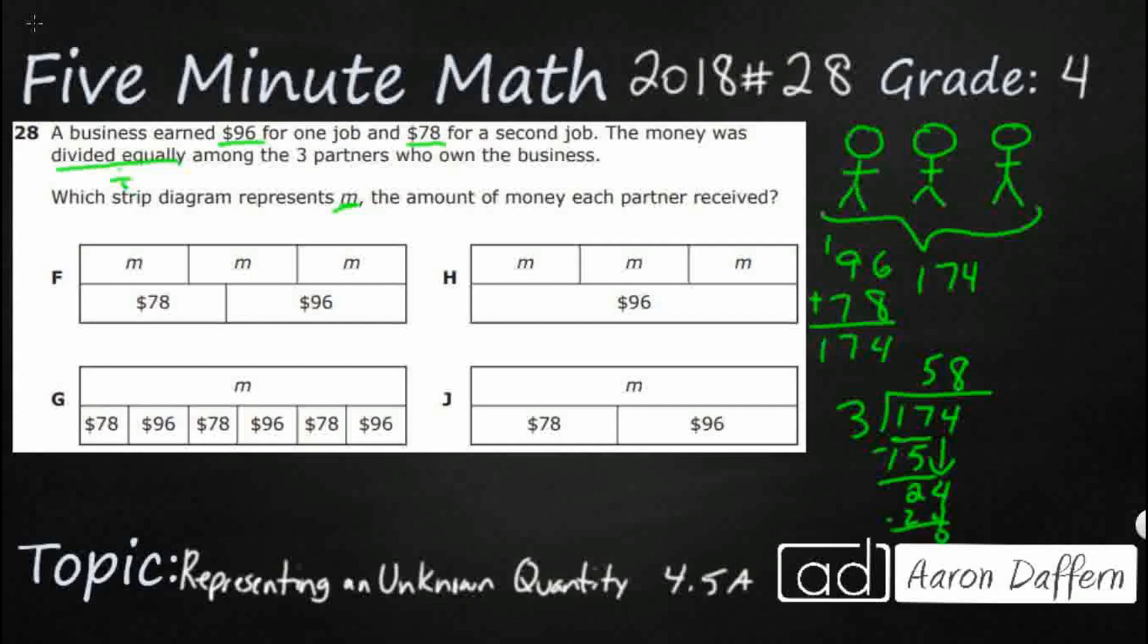So there we go, $58. So each of these people get $58. And sometimes when we're looking for an unknown, if possible, it's kind of nice to see if we can figure out what that unknown is, because that's going to help us.